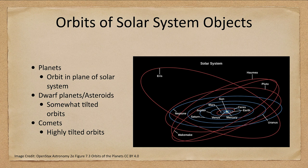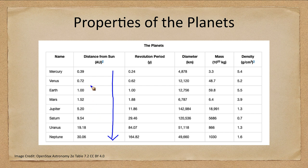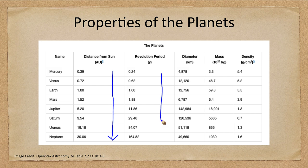Now let's look at the properties of the planets. This is just some general properties. Distance going from Mercury as the closest to Neptune at the furthest. Mercury a little over about 0.39 astronomical units away, and Neptune about 30 astronomical units away. Revolution periods going from about 88 days here for Mercury, about a quarter of a year, and up to 164 years for Neptune.